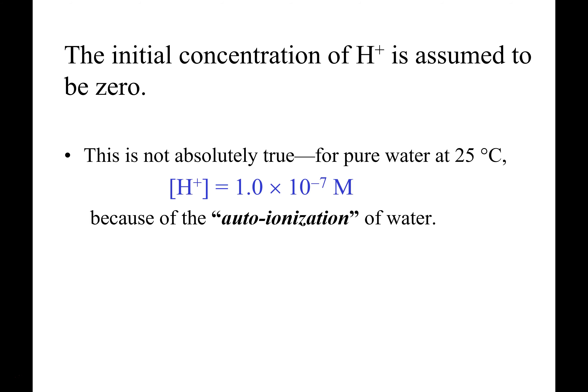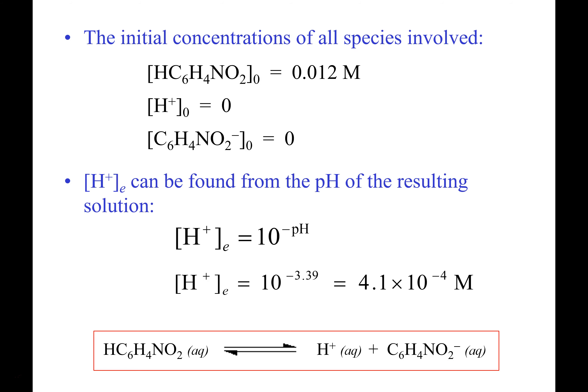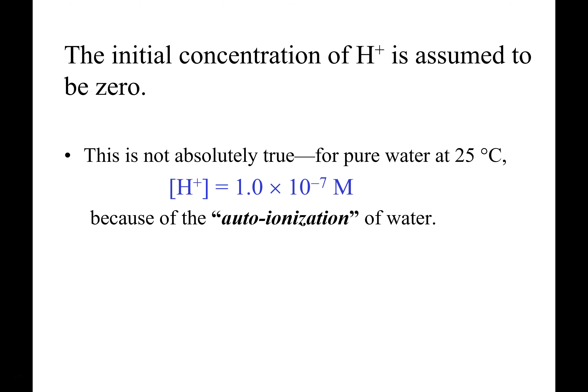On my ice table, I put a big fat zero for the initial molar concentration of hydrogen ion, which really wasn't exactly right. But you figure the magnitude of the hydrogen ion from auto-ionization of water is really pretty low — magnitude 10⁻⁷ — compared to this. So that works.